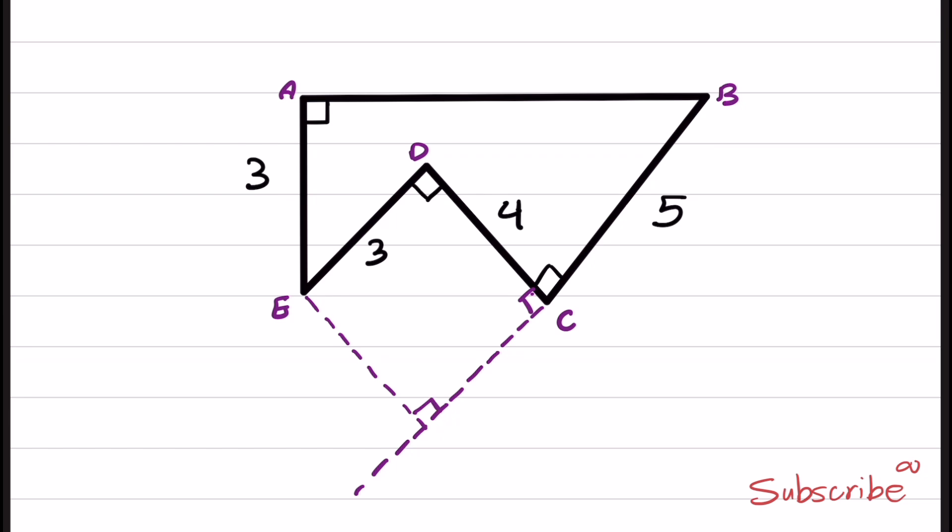And this is also perpendicular, which gives us a right angle. And if we have a shape like this, which has three right angles, the fourth angle is also 90 degrees.